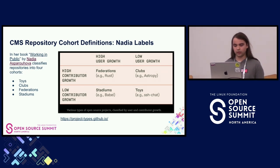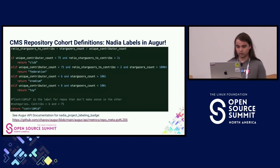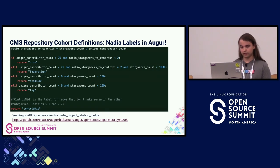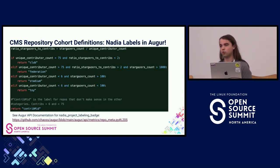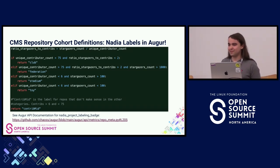We worked with the Microsoft OSPO — with Justin Gosses and Jim Seary — to push the Nadia labels upstream to Augur so that anybody can use them. The implementation includes all of the taxonomy from the previous slide plus an additional category called 'contrib mid,' added to avoid forcing any repository into a category that's not reflective of its character. There's a link to the exact part of the Augur code where we implemented it. Further information on Nadia labels can be found at project-types.github.io.